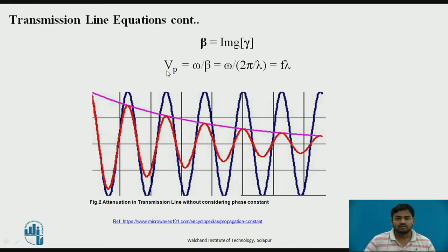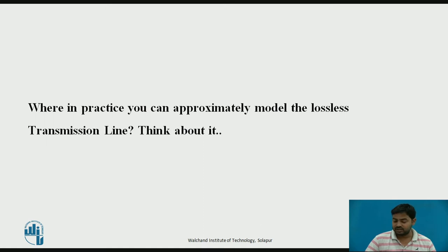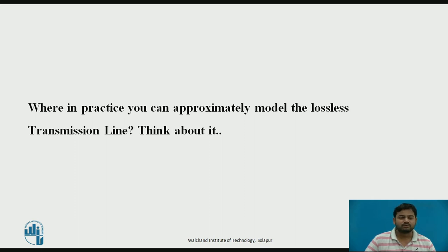The velocity of the wave is given by the phase velocity, which equals omega divided by beta, where beta equals 2π divided by lambda. An interesting question for practice: if you want to approximate a lossless transmission line, think about it and write it down — how can you model or approximate a lossless transmission line?